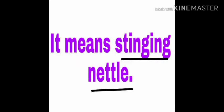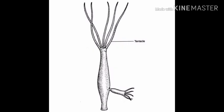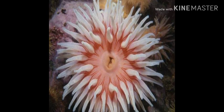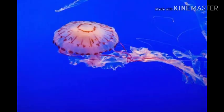First of all, what do you know by the word Cnidaria? It means stinging nettle. Stinging nettle is present at the tentacles of animals, which contain a poisonous substance. This poisonous substance helps them for eating small animals present in water. Cnidaria is also known by the name coelenterata. Let's see how Cnidaria are feeding their prey.